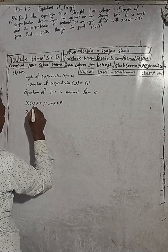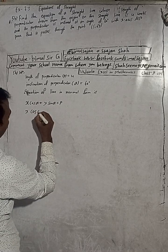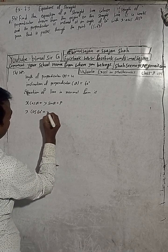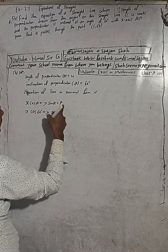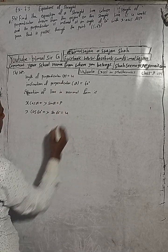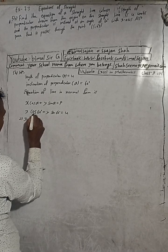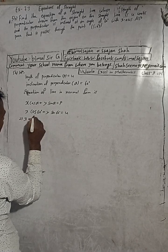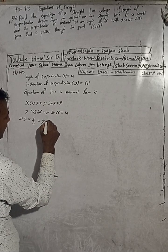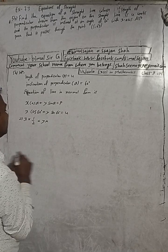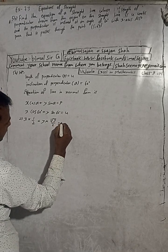Substituting the values: x cos 60° + y sin 60° = P, which equals 4. Now cos 60° = 1/2, and sin 60° = √3/2.